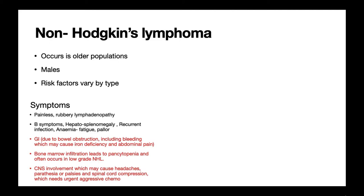With non-Hodgkin's lymphoma, the spread is typically more random and it usually presents with more metastatic disease. The patient may have abdominal symptoms if the GI system is affected — for example, obstruction causing abdominal pain. The patient may have reduced bowel frequency, and chronic bleeding may lead to iron deficiency microcytic anaemia. If the bone marrow is affected, production of red cells, white cells, and platelets is impaired, causing pancytopenia. Critical sites such as the central nervous system may also be affected, causing headaches and spinal cord compression requiring urgent treatment.